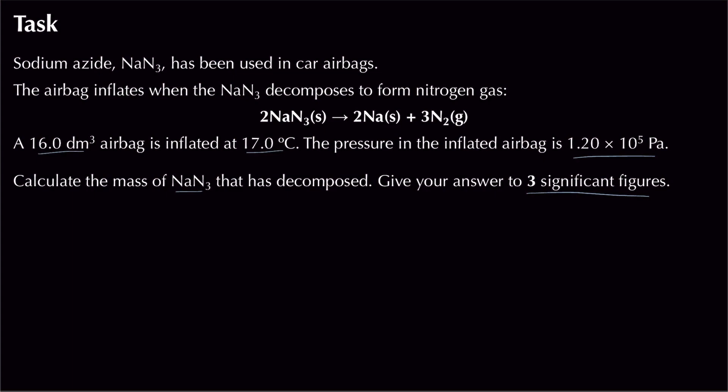We're asked to calculate the mass of sodium azide that decomposed, to three significant figures. There's a lot going on, so break it down: Step 1 — use the ideal gas equation to find moles of N₂. Step 2 — use stoichiometry to find moles of NaN₃. Step 3 — use molar mass to find mass of NaN₃.